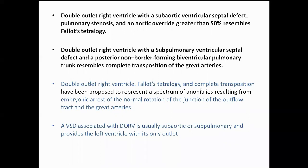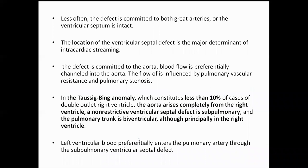Tetralogy of Fallot, complete transposition, and DORV are basically anomalies of a common embryonic abnormality, which is the arrest of normal rotation of the junction of the outflow tract and the great arteries. A VSD with DORV is usually subaortic and subpulmonary and provides left ventricular outflow with its connection.